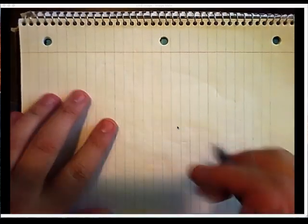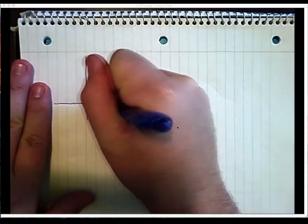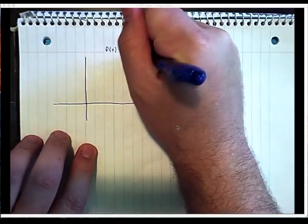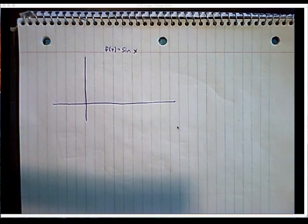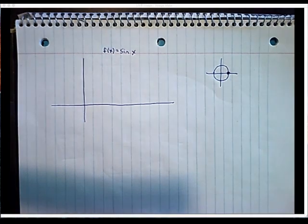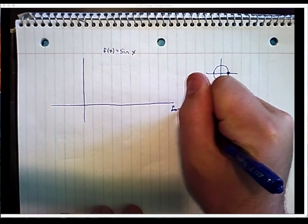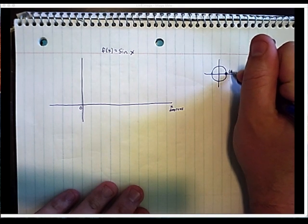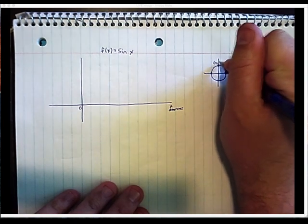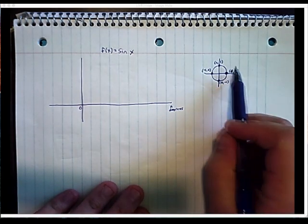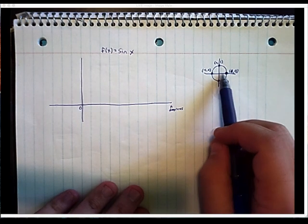Let's start with the sine curve. Let f of x equal sine of x. You should remember what a sine curve looks like, but if you don't, just think about the unit circle. When x is measured in degrees: at zero degrees, the point is (1, 0), at 90 degrees it's (0, 1), at 180 degrees it's (-1, 0), and at 270 degrees it's (0, -1). Remember, the sine is like the y value. So when we're at zero degrees, the sine value is zero.